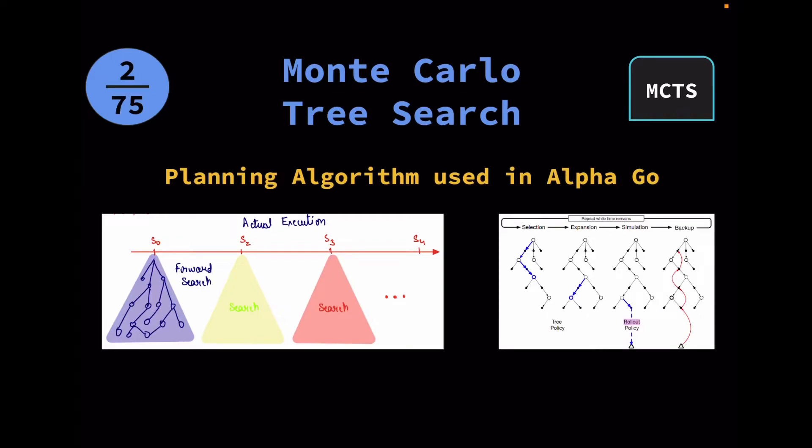Today we are going to look at Monte Carlo Tree Search, famously known as MCTS. This is a planning algorithm used in AlphaGo.